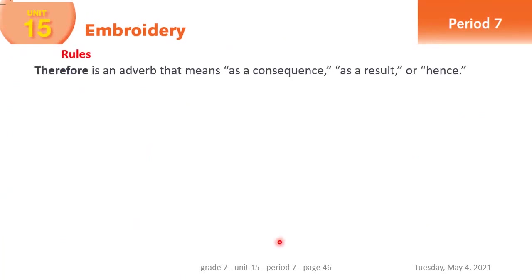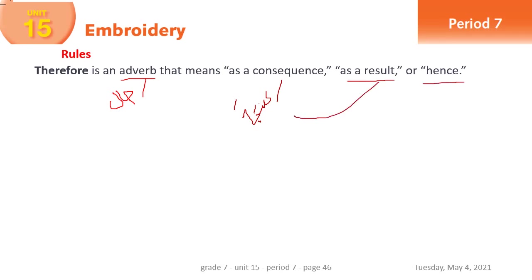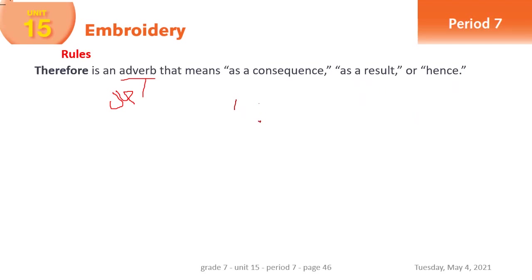Now let's move to the rules. The first rule: 'therefore' is an adverb — it is a حال (adverb of manner/result). Its meaning is: as a consequence, as a result, or hence — وبالتالي / إذن / نتيجة لذلك. All these meanings point to a result or consequence.